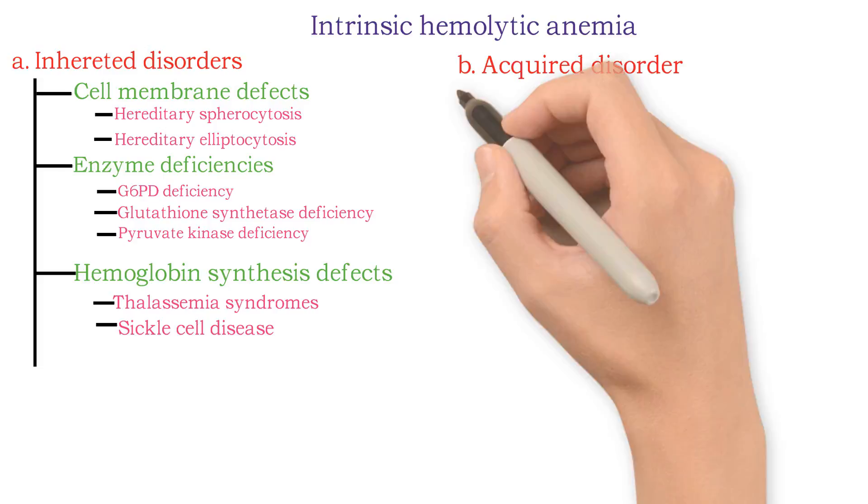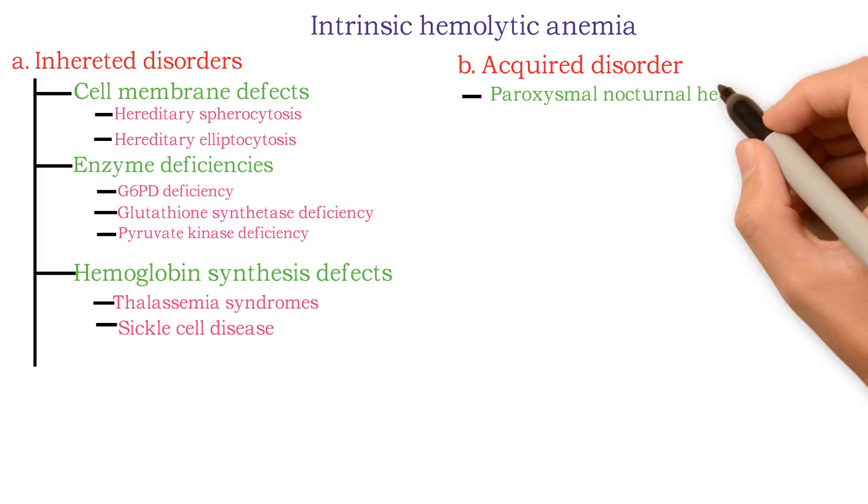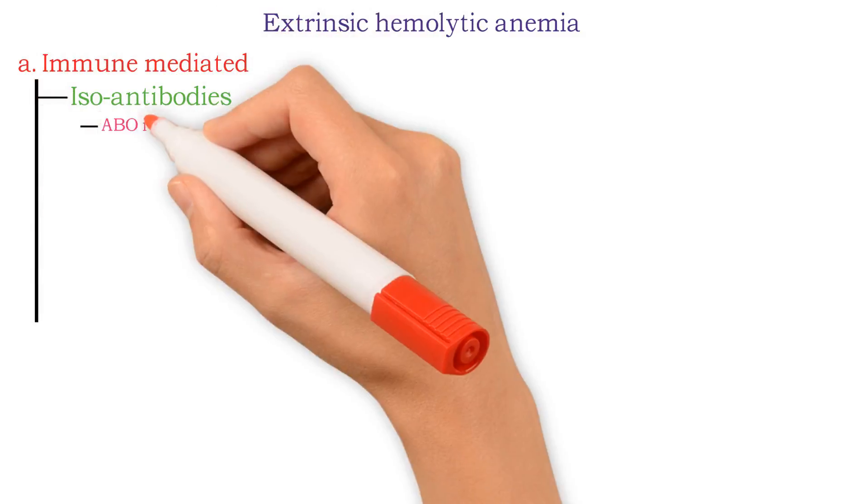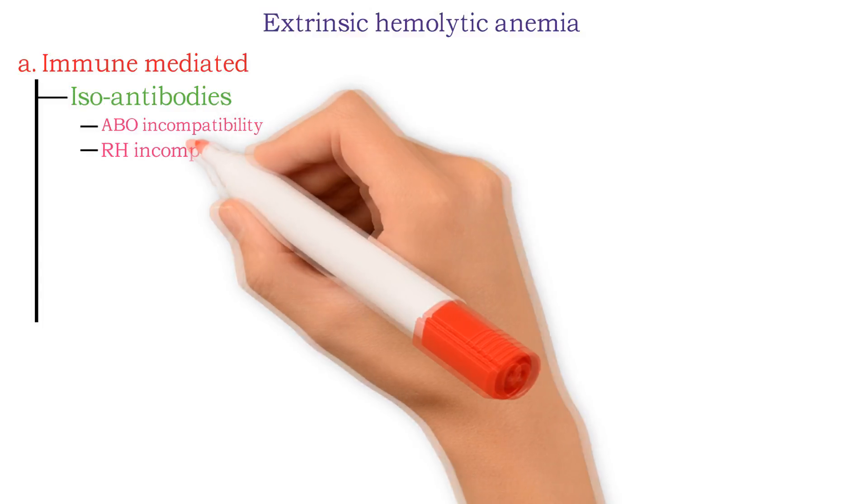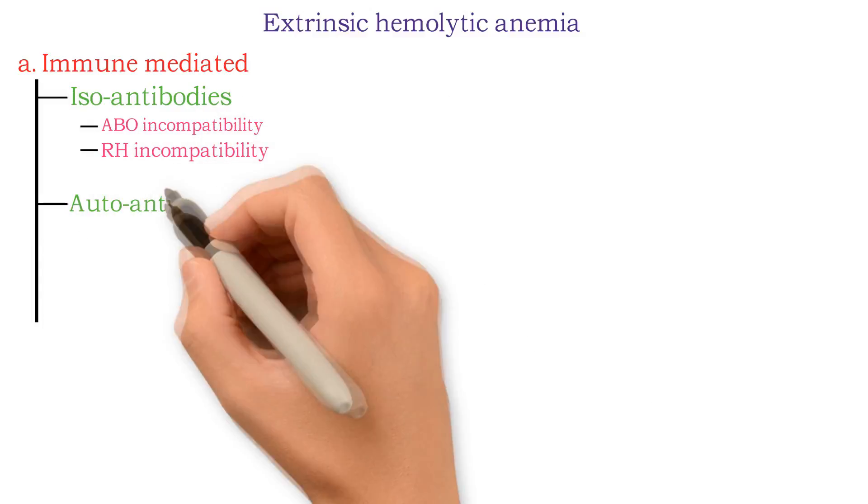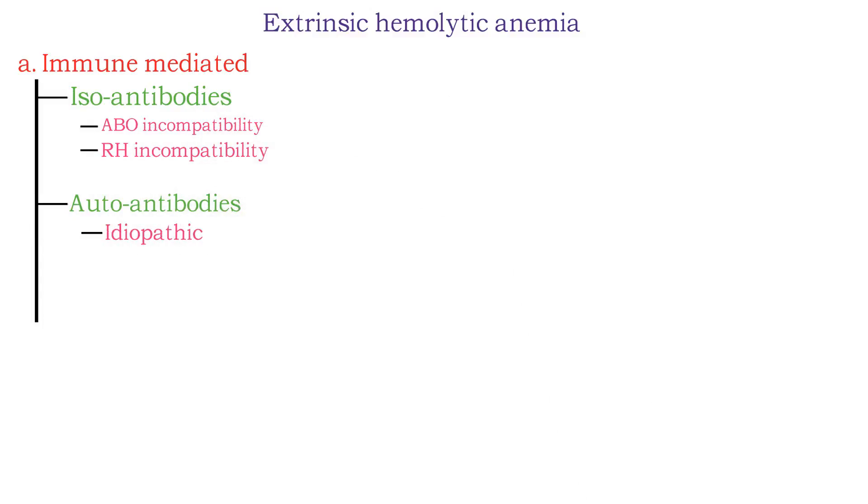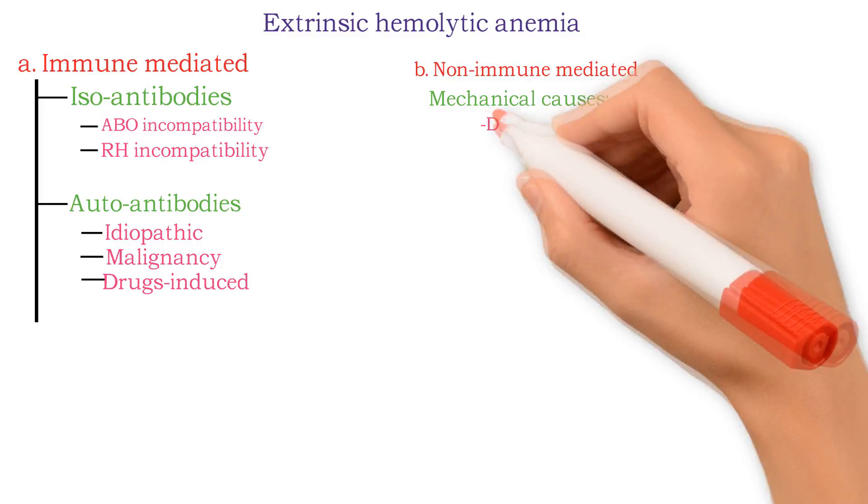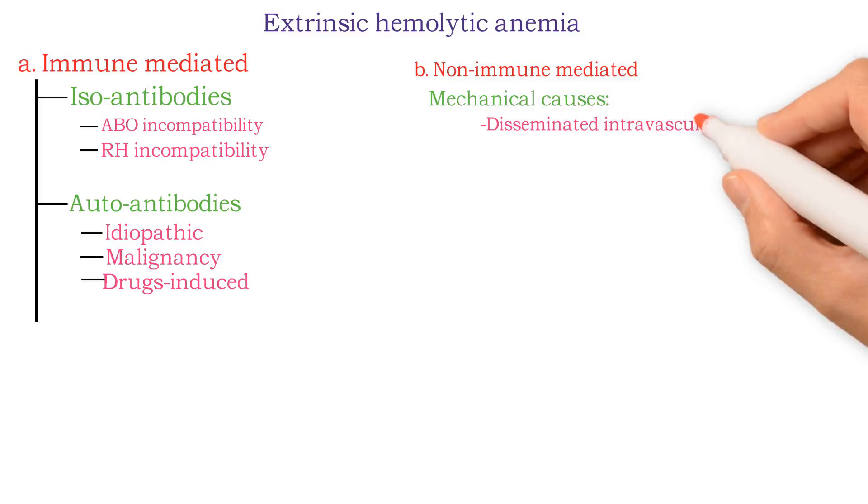Extrinsic hemolytic anemia: immune mediated includes iso-antibodies like ABO incompatibility and Rh incompatibility, auto-antibodies that can be idiopathic, malignancy, or drug induced. Non-immune mediated includes mechanical causes which include disseminated intravascular coagulation.